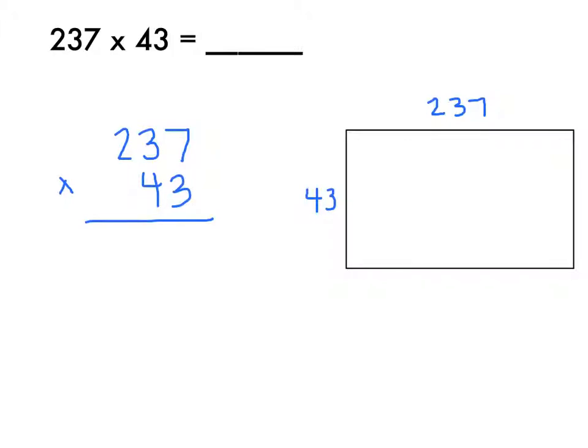Really what I'm going to be doing today in this problem is solving 237 times 3 and 237 times 40. So I'm going to start by breaking up my array to show that. I have 40 and I have 3, and I'm going to start with 237 times 3. So I'm going to be figuring out what belongs here in my array.